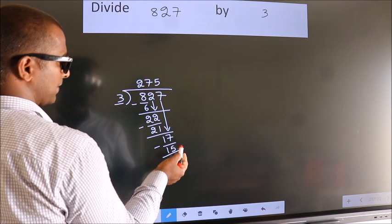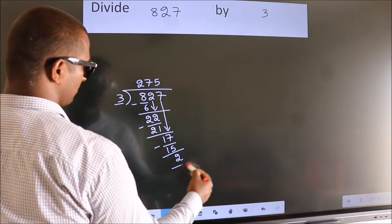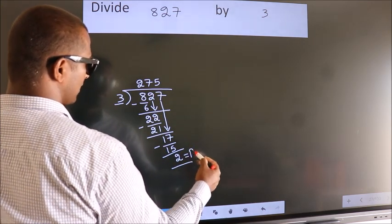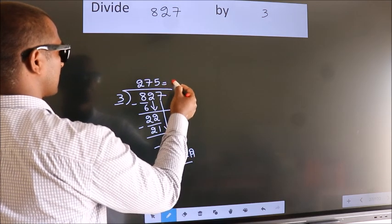No more numbers to bring it down. So we stop here. This is our remainder. This is our quotient.